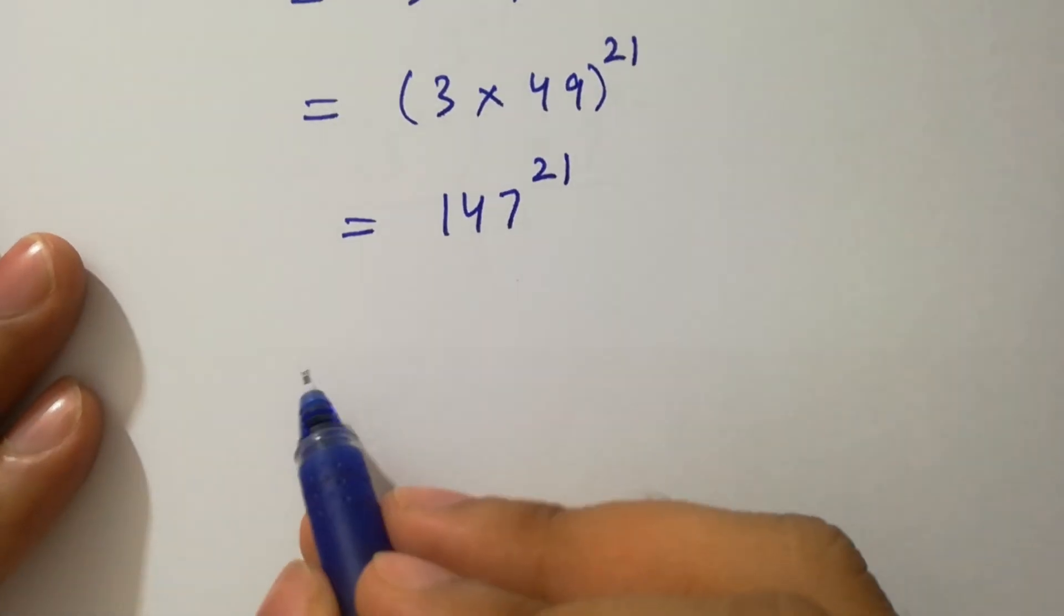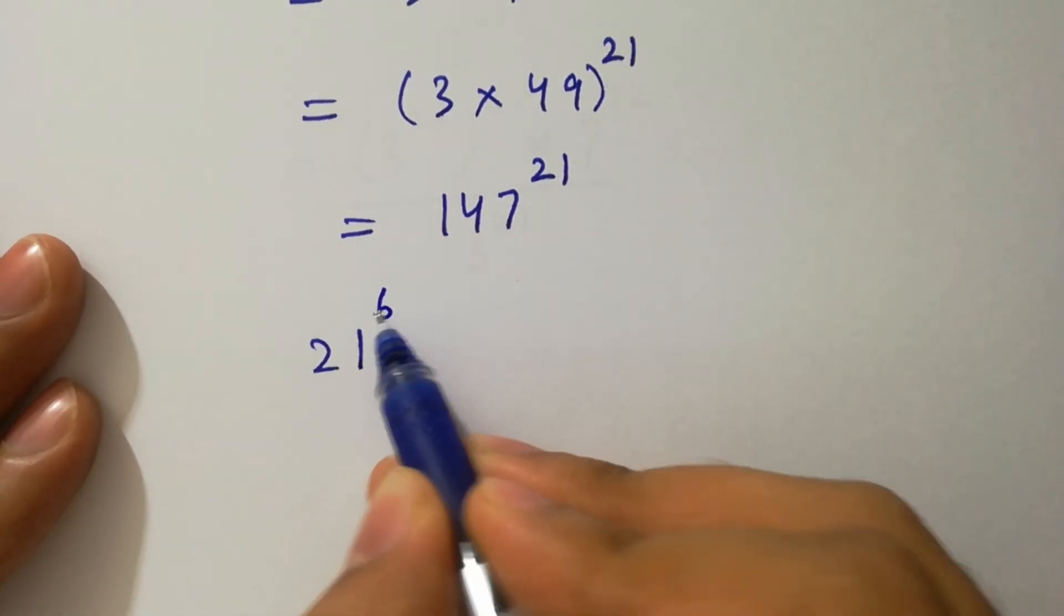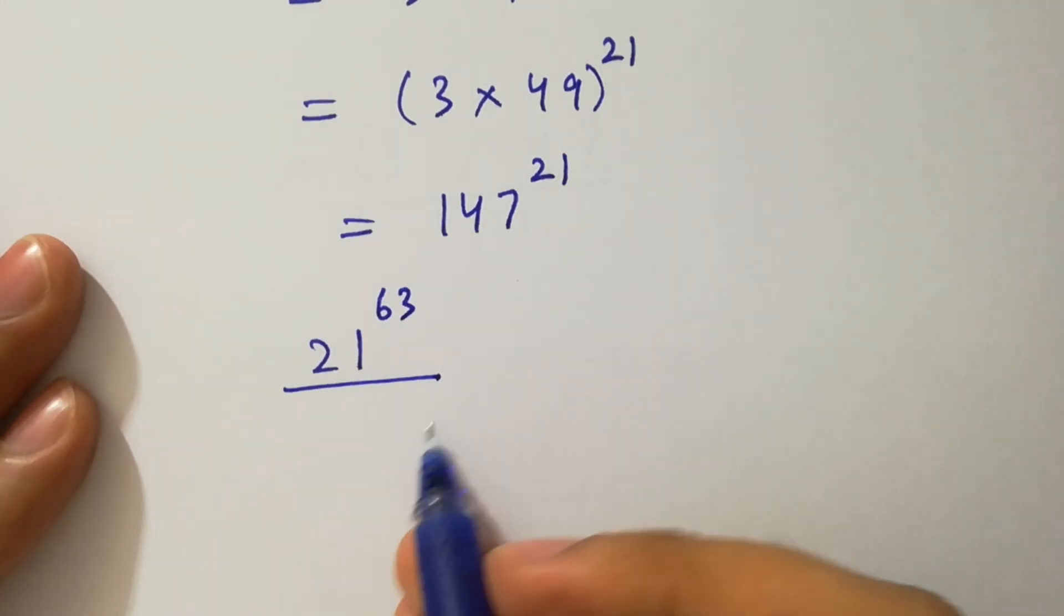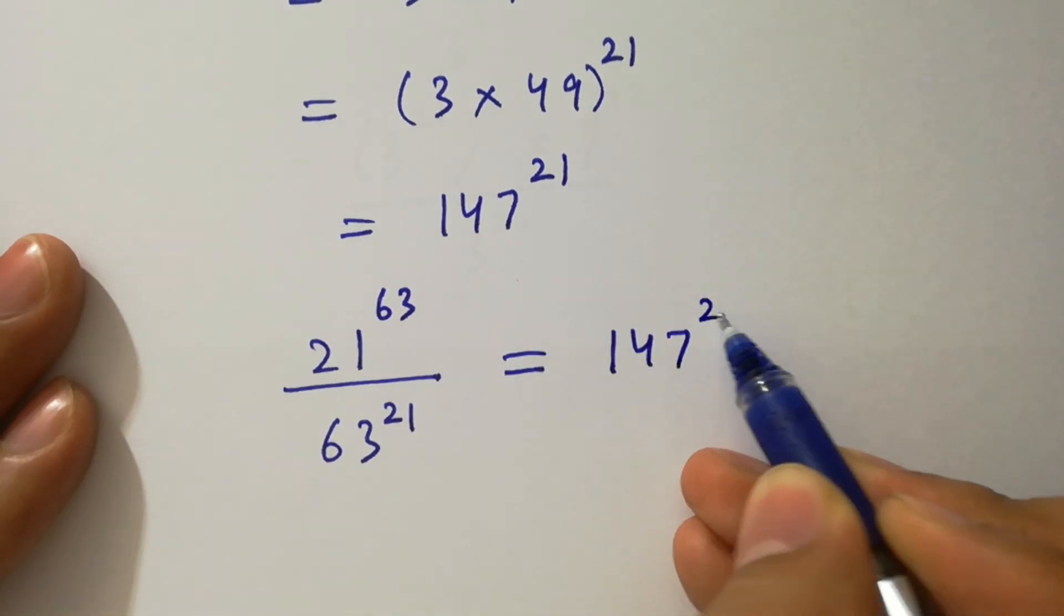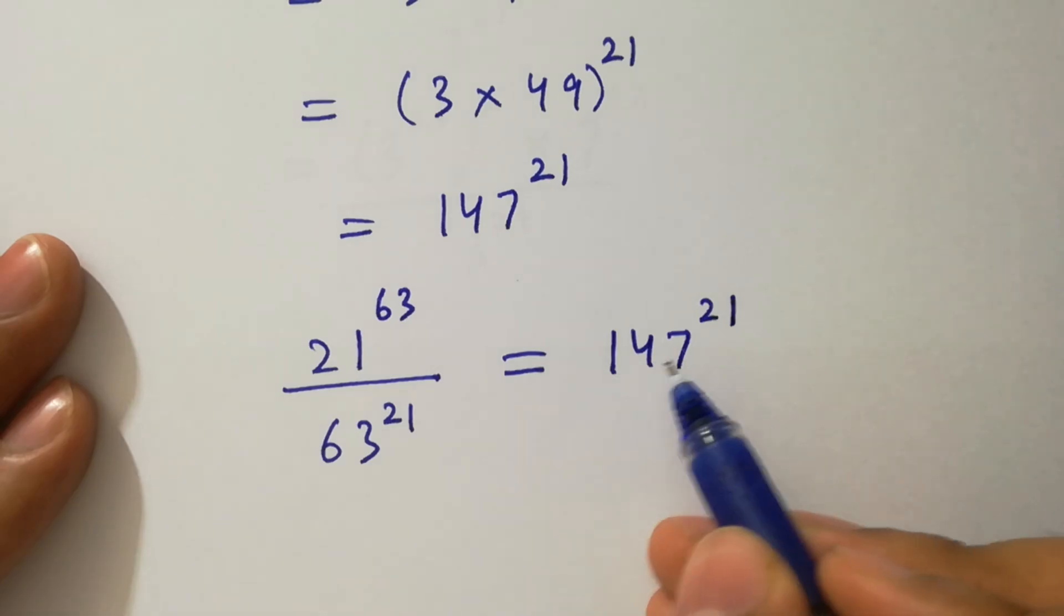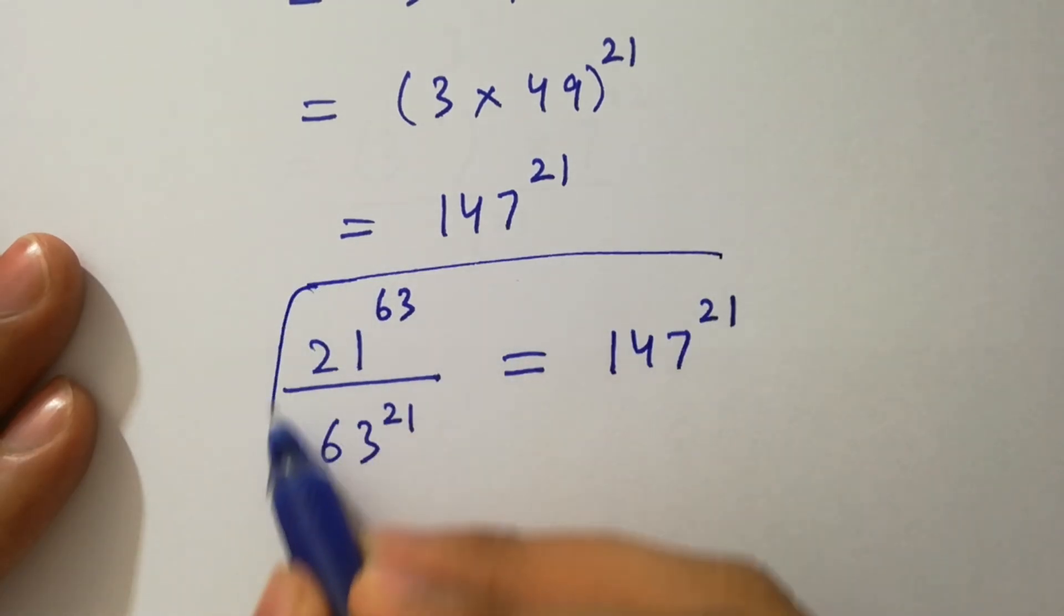Finally, 21 to the power 63 over 63 to the power 21 is equal to 147 to the power 21, which is our final answer.